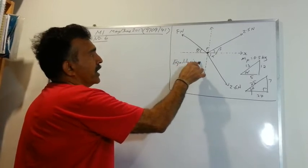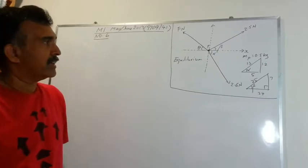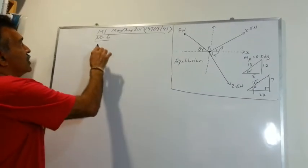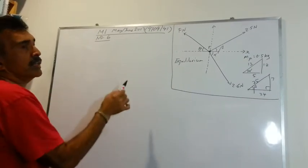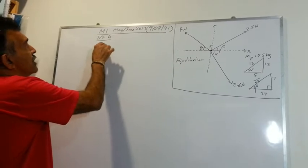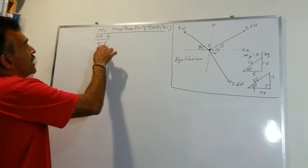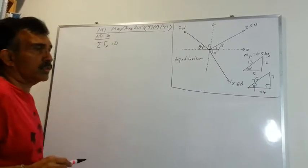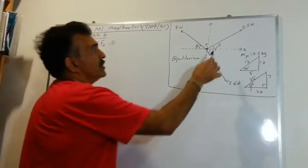And we are asked to find F and theta. So let's start solving. Since this system is in equilibrium, the sum of forces in the x direction will be 0. So let's resolve the forces here.